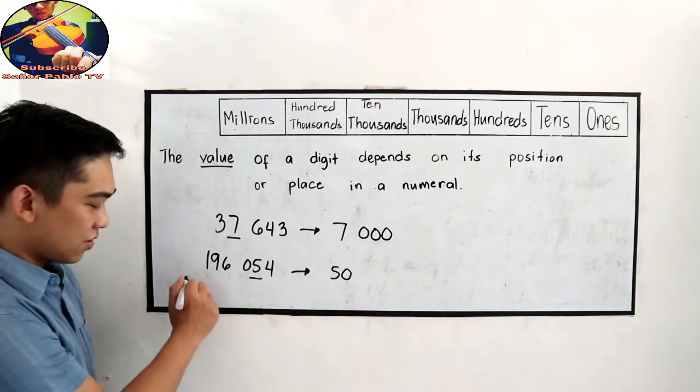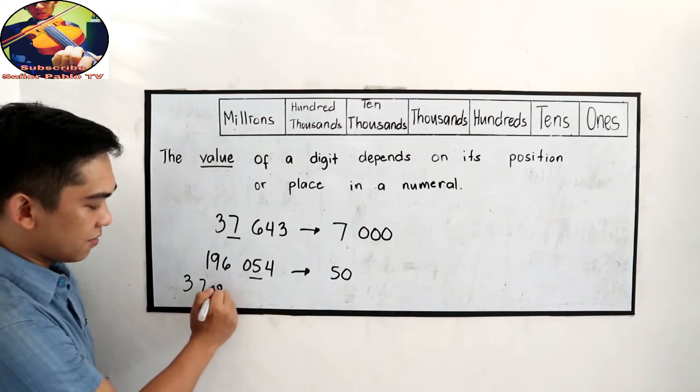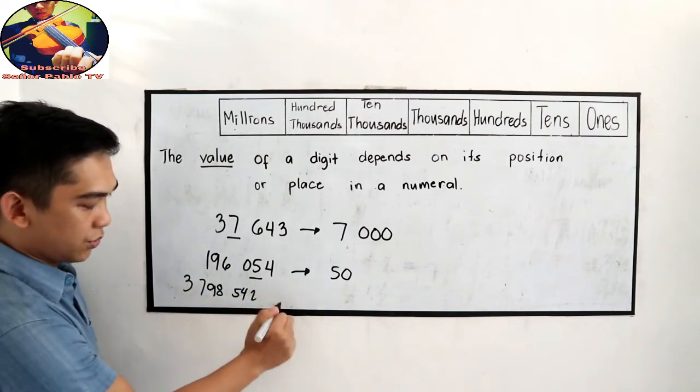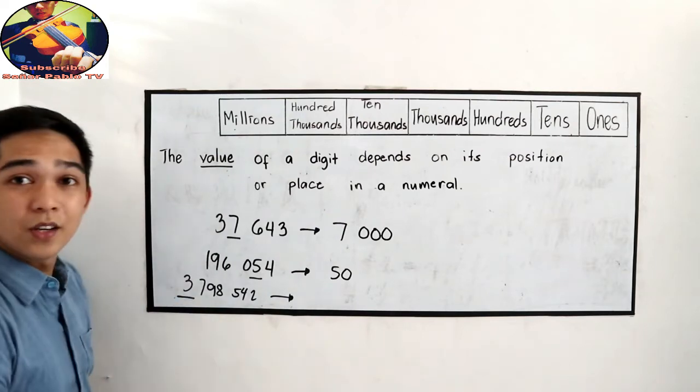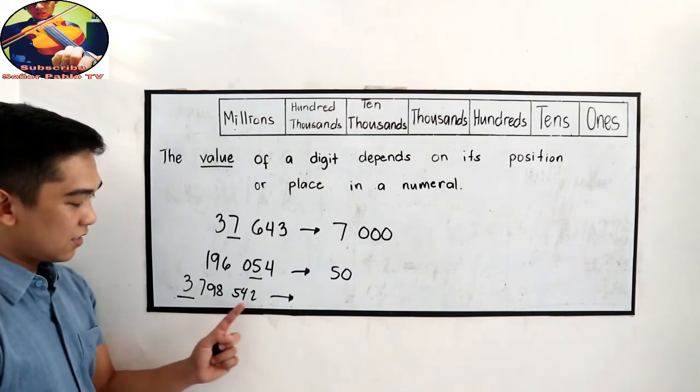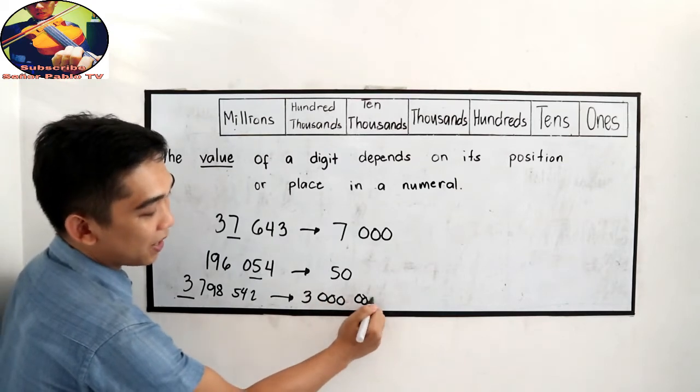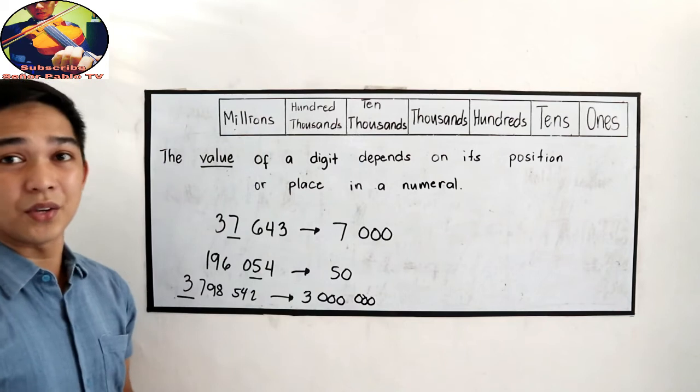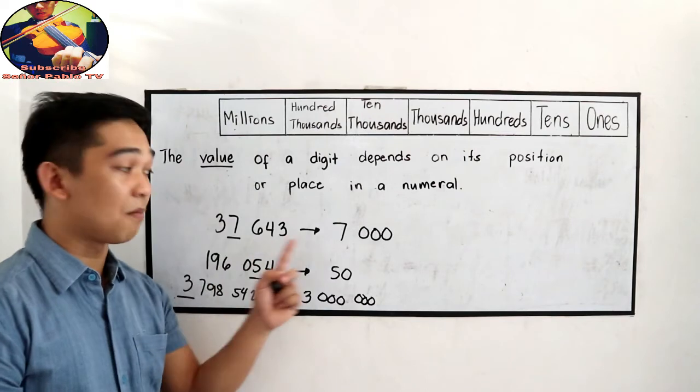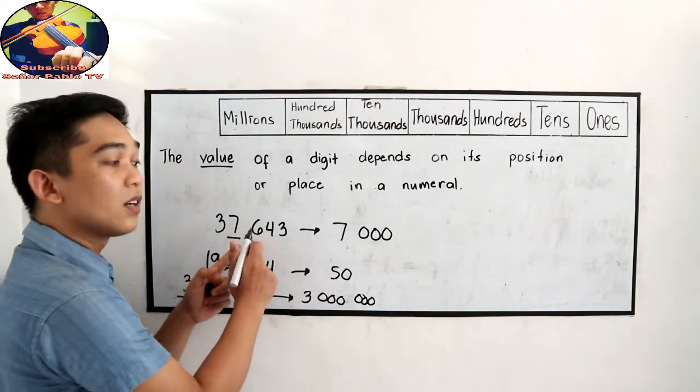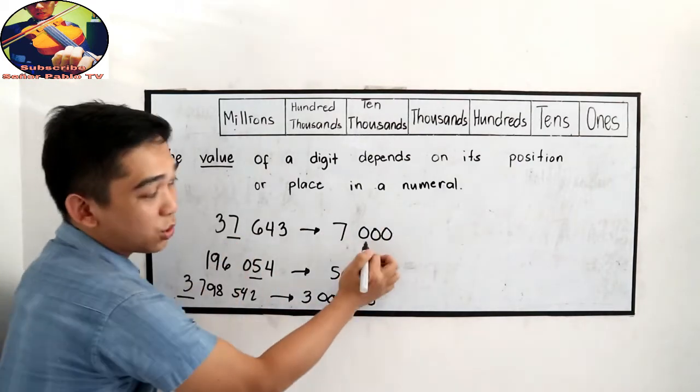Let's say we have 3,798,542. The underlined number is 3. So what is the value? 3. Then, so that is 3 million. So the tactic is, in getting the value of the underlined digit, is that copy the underlined number, then just replace the remaining digit going to right into zeros.